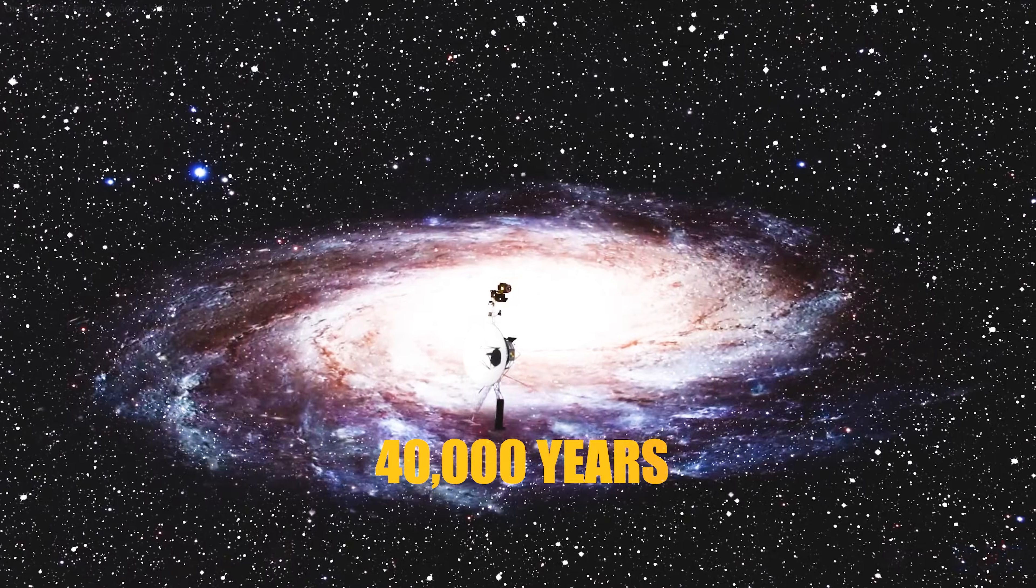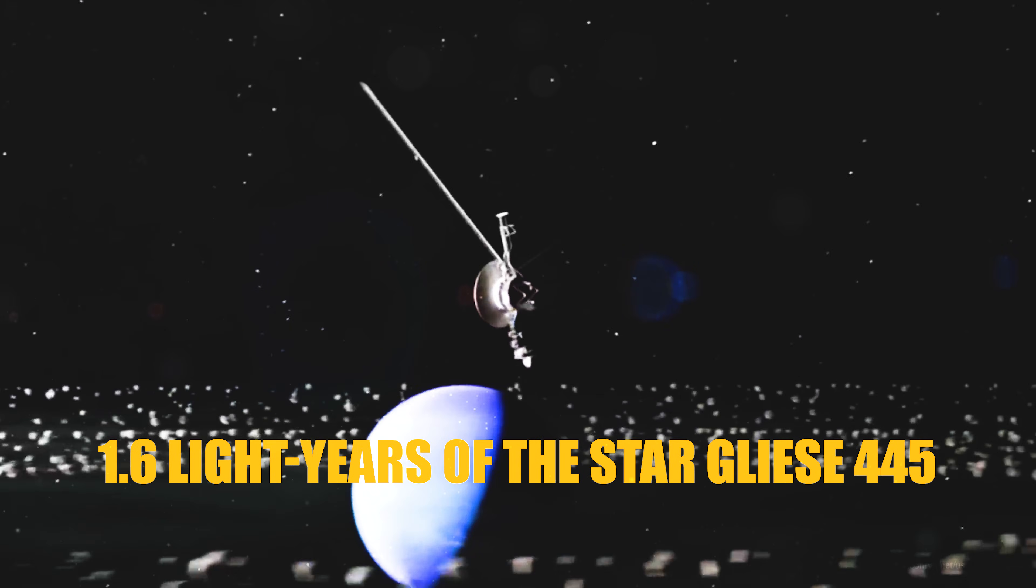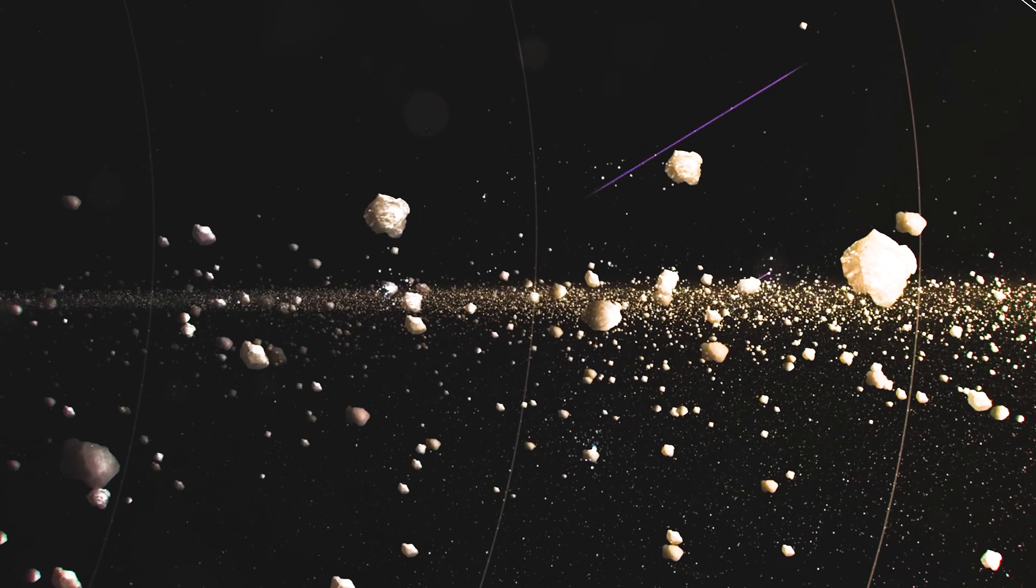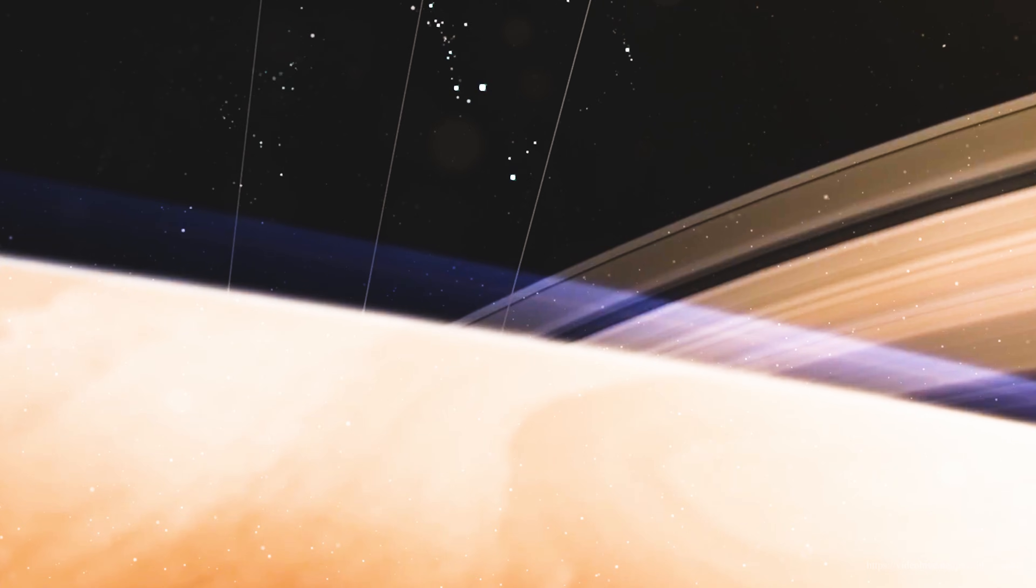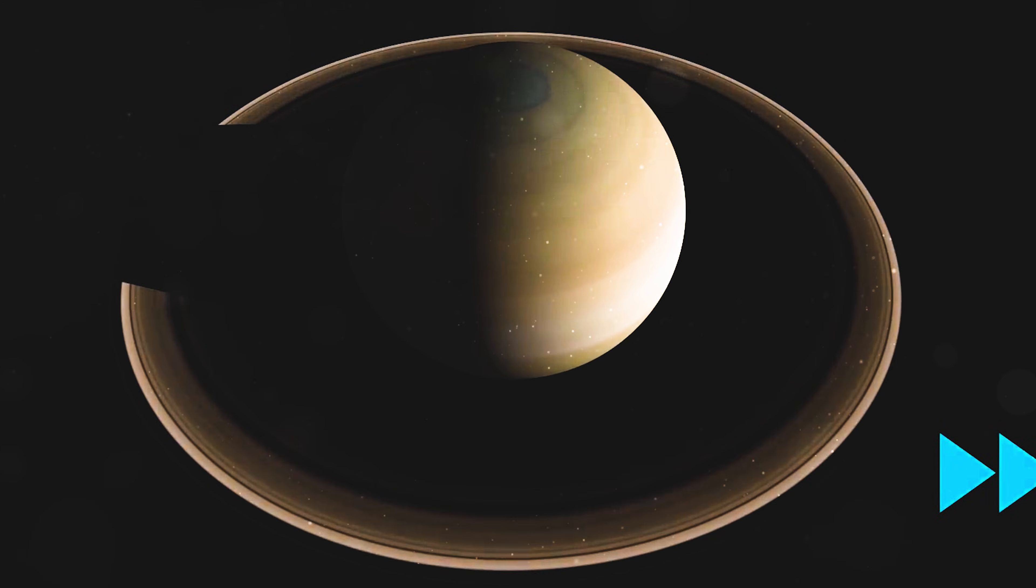40,000 years before Voyager 1 passes within 1.6 light-years of the star Gliese 445. Long after their power runs out. Long after their voices fade. Long after anyone alive today is gone. And yet, they will continue to drift. Silent. Cold. Carrying the golden record. A message from humanity meant to last a billion years.